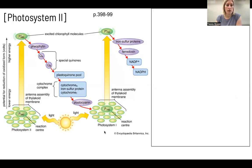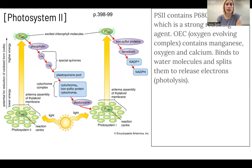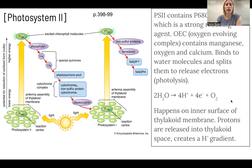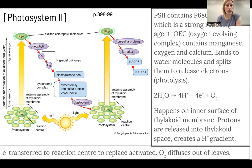In photosystem two, that contains P680 chlorophyll, which is a strong reducing agent, and the oxygen evolving complex contains magnesium, oxygen, and calcium. It is going to bind to water molecules and split them to release those electrons and create free hydrogen ions as well as oxygen as a waste product. This process is called photolysis, which means splitting. That's happening on the inner surface of the thylakoid membrane, and protons are released into the thylakoid space, creating a hydrogen ion gradient. Electrons are transferred to the reaction center to replace activated electrons that have moved to the next photosystem, and oxygen diffuses out of the leaves.